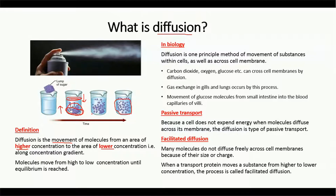After some time, an equilibrium is developed. This movement is called movement along the concentration gradient — from higher concentration to lower concentration — and the molecules will continue to move like this until equilibrium is achieved.